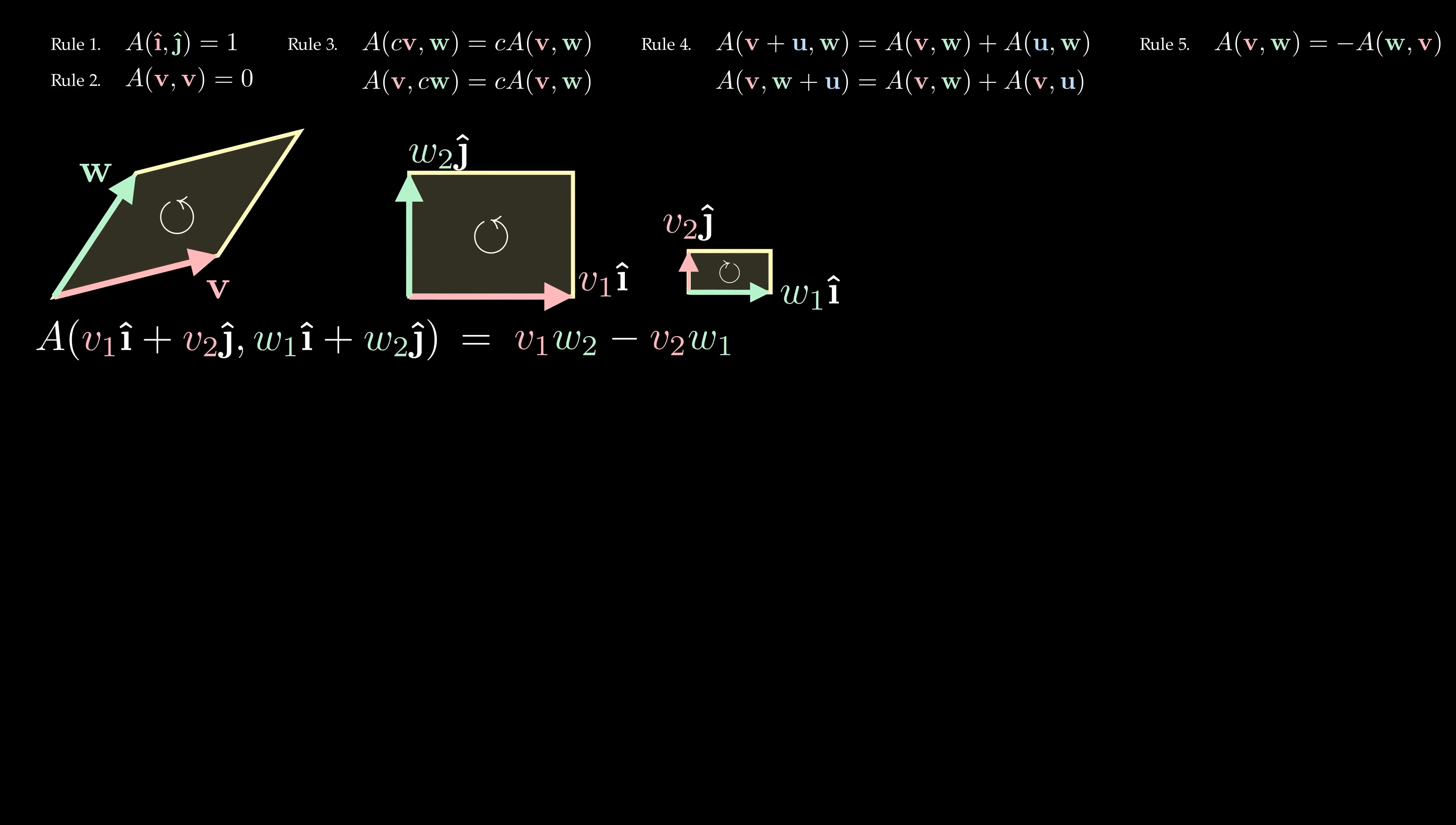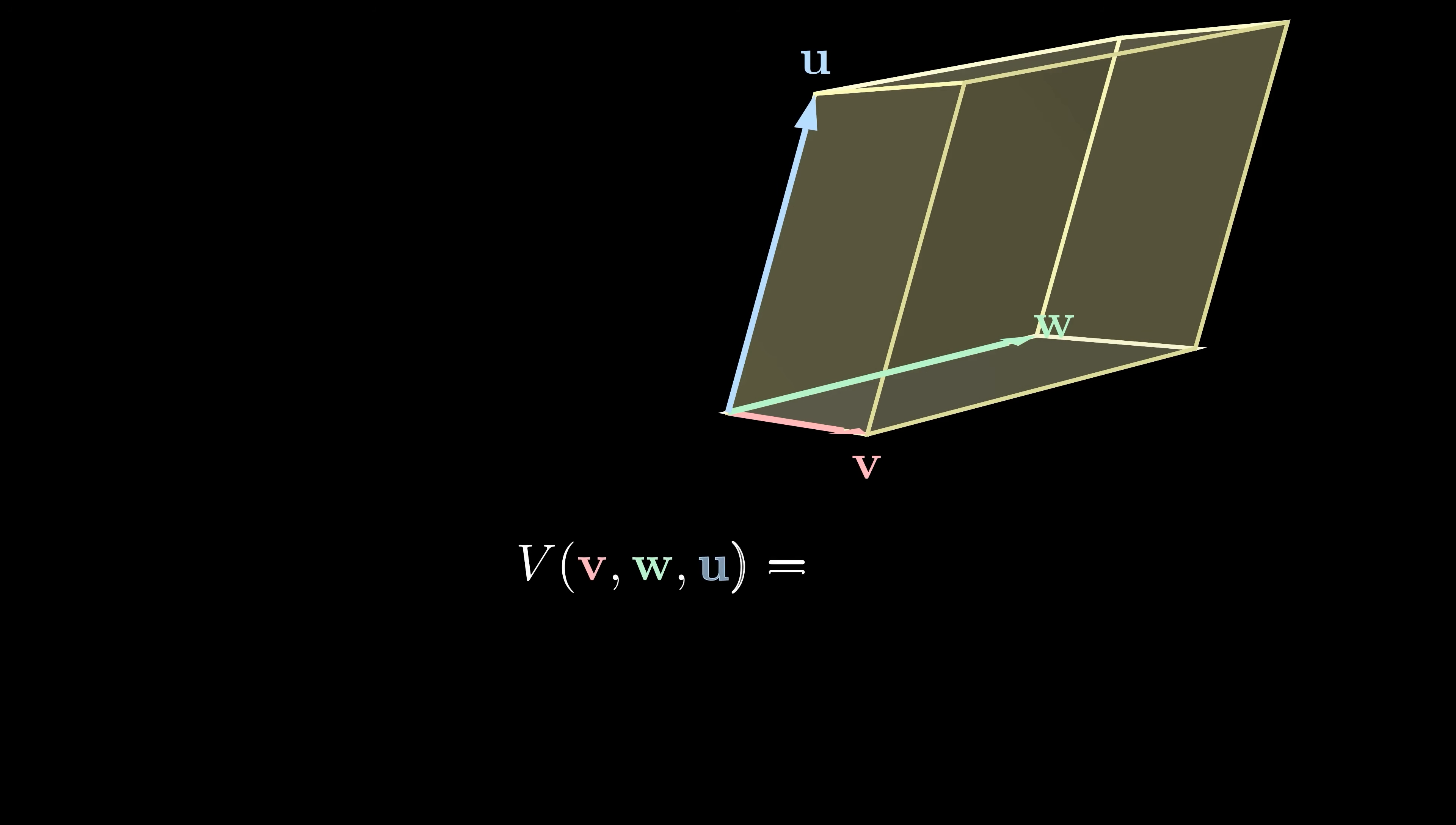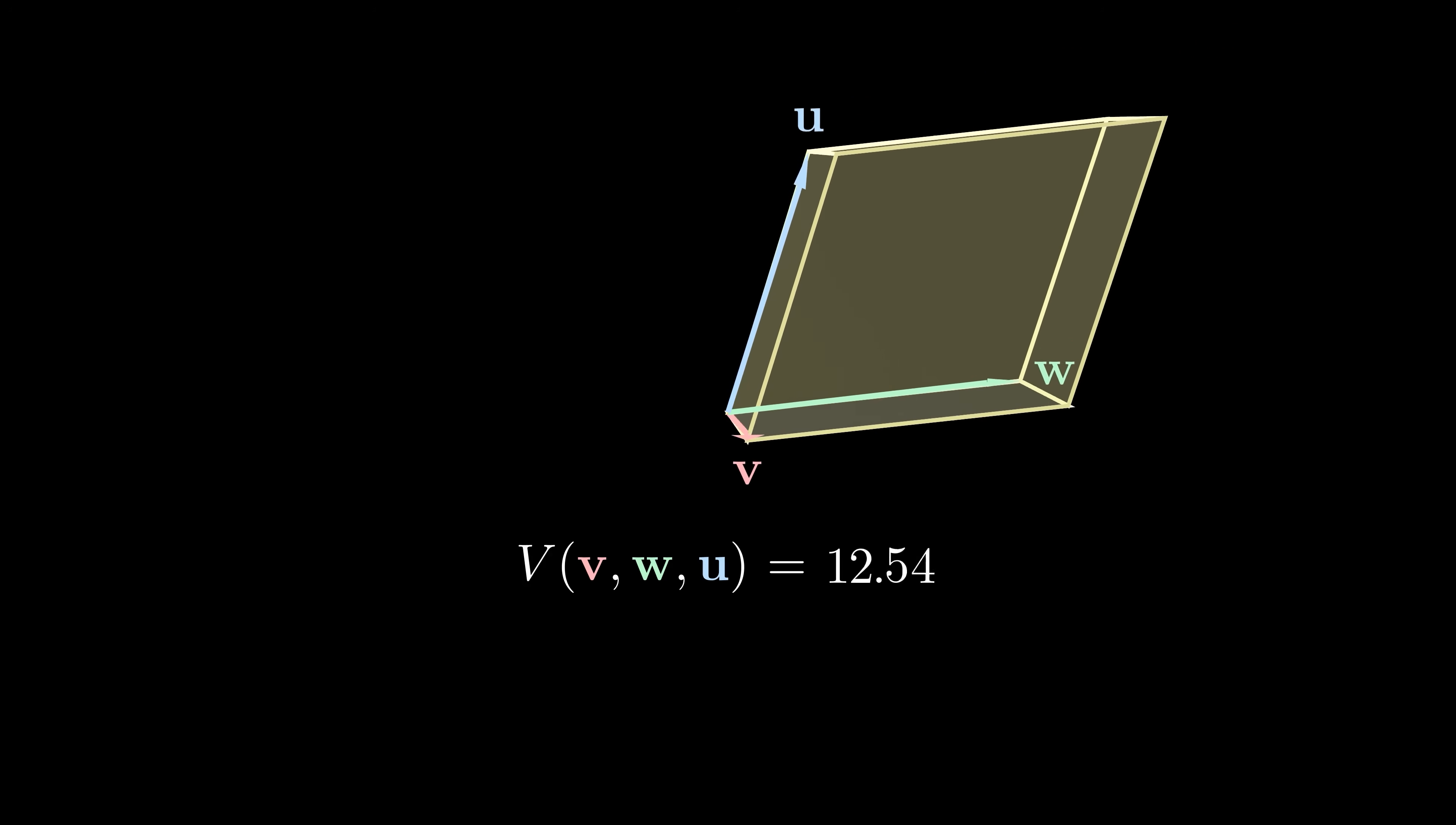And just like that, we've discovered the formula for the determinant of a 2×2 matrix. Going up a dimension, finding the volume of a parallelepiped seems to be a significantly harder task. But really, we've already done most of the work. The rules in 3D are very similar.